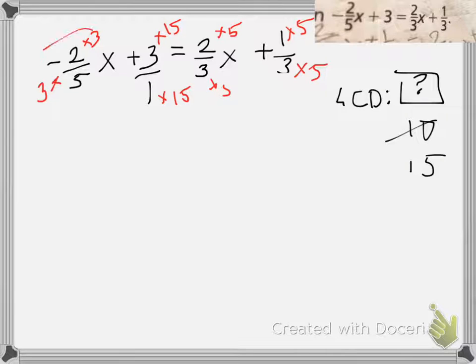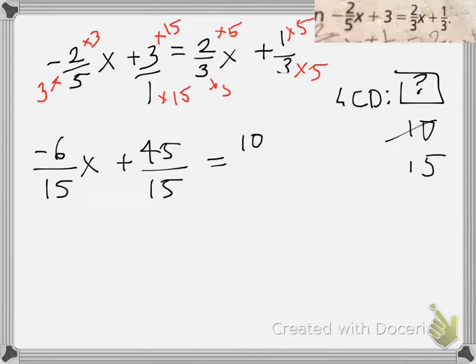Let's start with this one. What's negative two times three? That's negative six over fifteen X. Then, three times 15 is 45 over 15. Two times five is 10 over 15 X, and then plus one times five is five over 15. See, this is what we wanted—all the bottoms to be the same, because only then does it make it easier for us to solve.